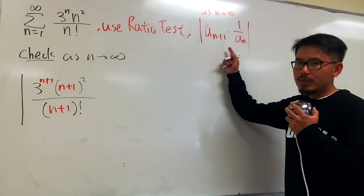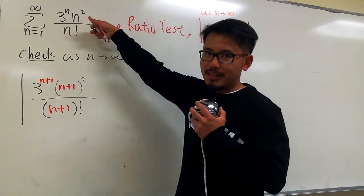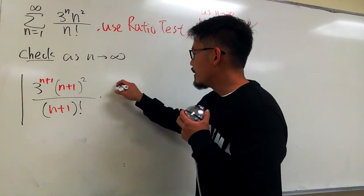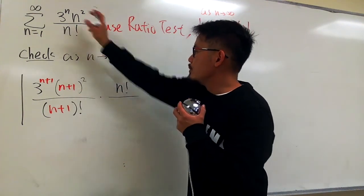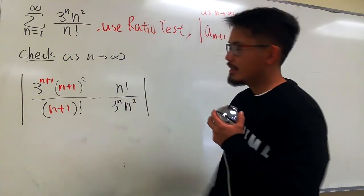Then we multiply by the reciprocal of a_n, the upside down version. We put this down as multiply: n factorial on the top over 3^n times n squared.